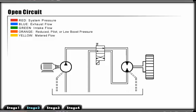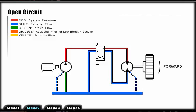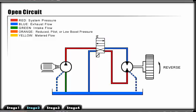In this circuit, a directional control valve is added to the circuit and the hydraulic motor is replaced by a bi-directional hydraulic motor. The directional control valve will allow the hydraulic motor to reverse direction when shifted.